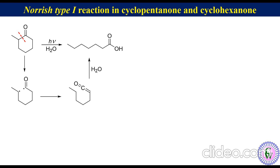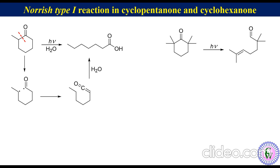If ketene formation is prevented by structural factors, unsaturated aldehyde is the major product even in a 6-membered saturated cyclic ketone. For example, 2,2,6,6-tetramethylcyclohexanone when irradiated gives the unsaturated aldehyde with 85% yield.